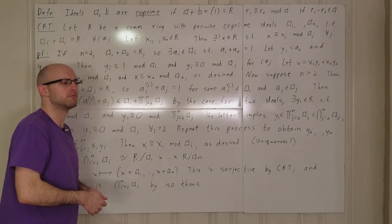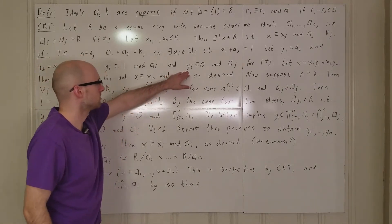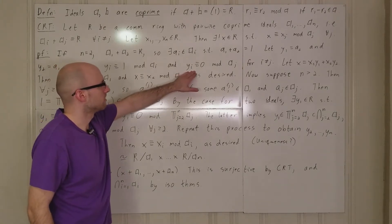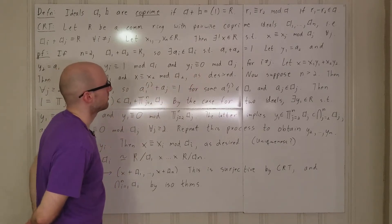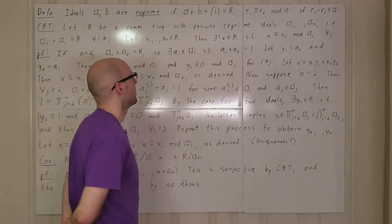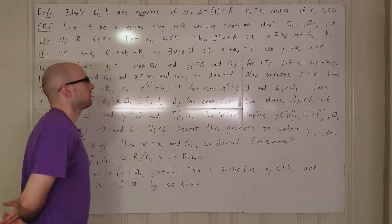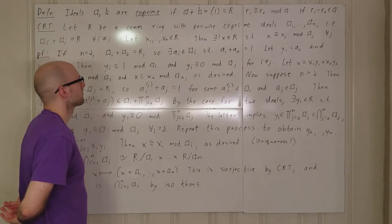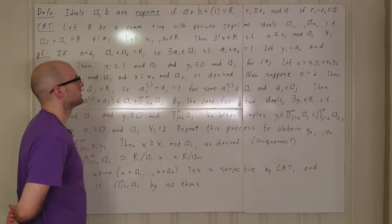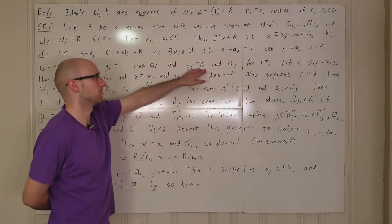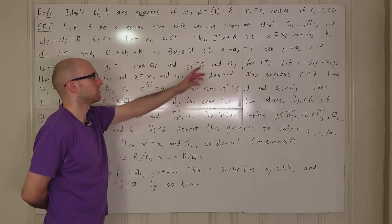Also, yi is congruent to 0 mod aj for i not equal to j. The only possibilities are 1 and 2, so y1 is congruent to 0 mod a2. That means y1 is in a2, and since y1 is a2, clearly y1 is in a2, so this holds because we chose it to work.